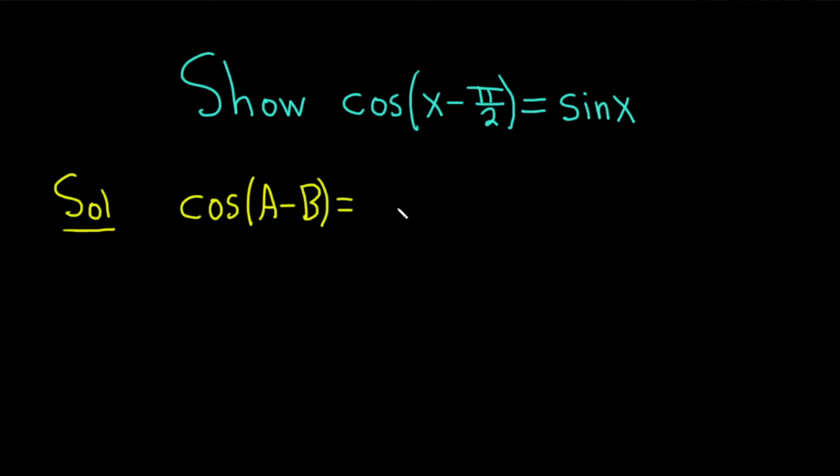this is equal to the cosine of a times the cosine of b, and then you flip the sign. Because we have a minus, we put a plus, just a memory trick, and then you have sine a and sine b.